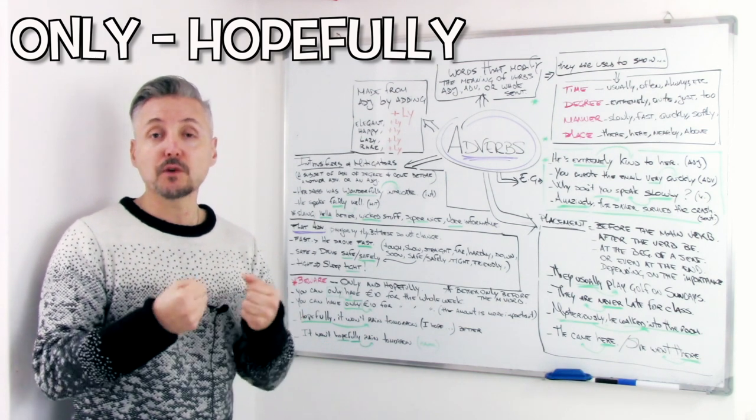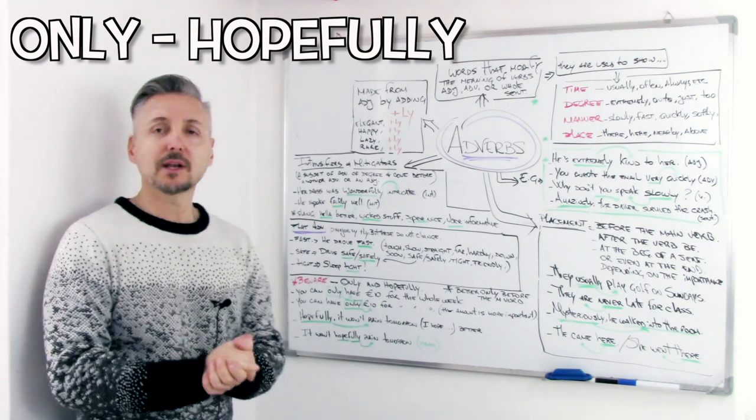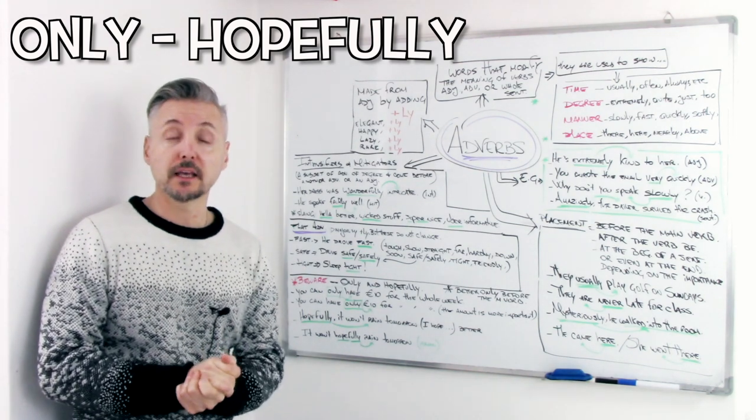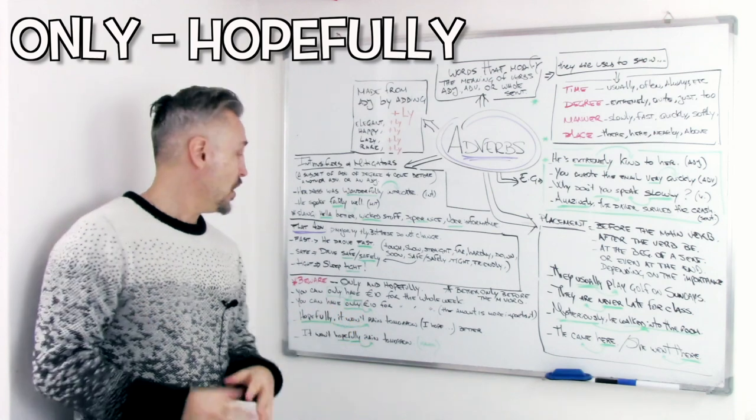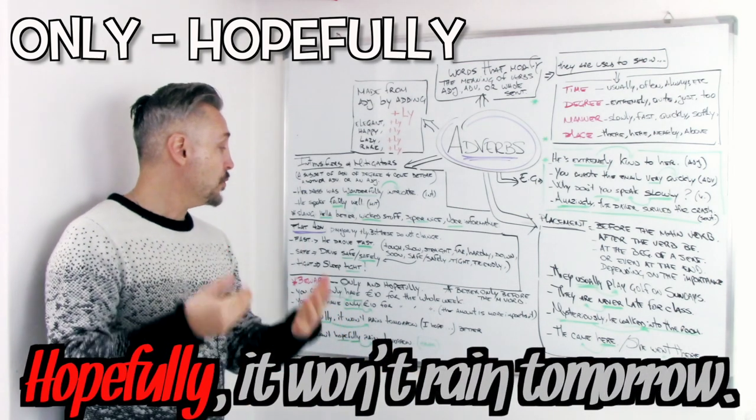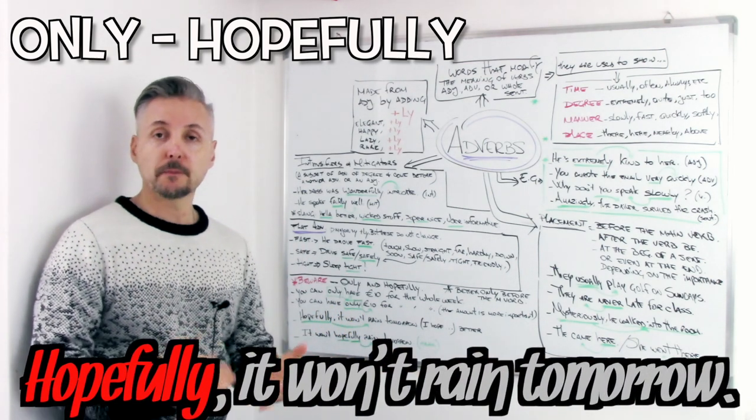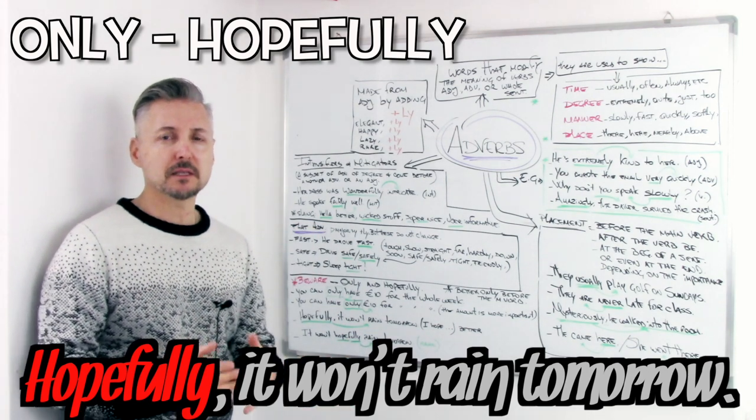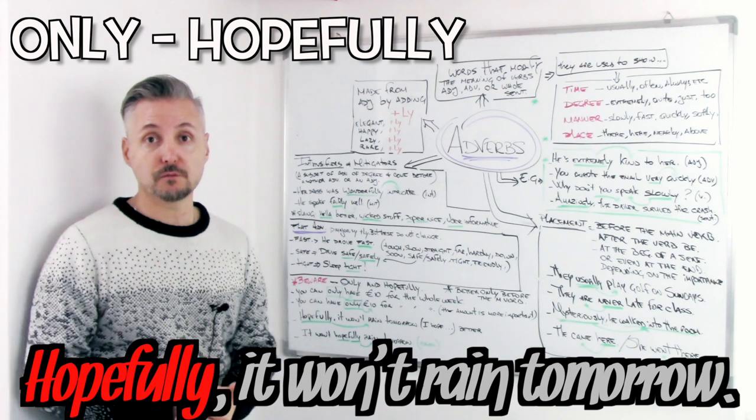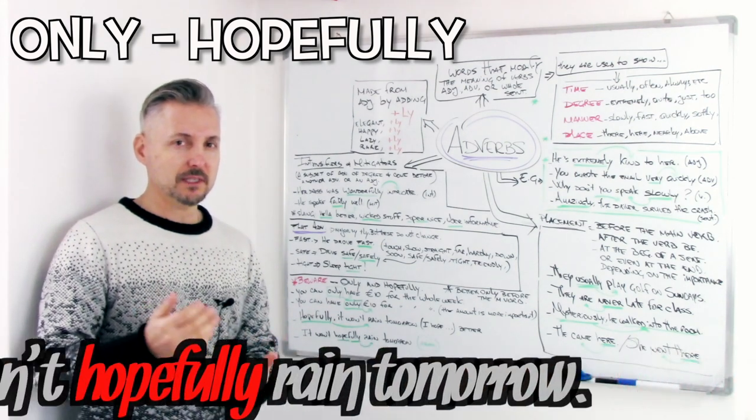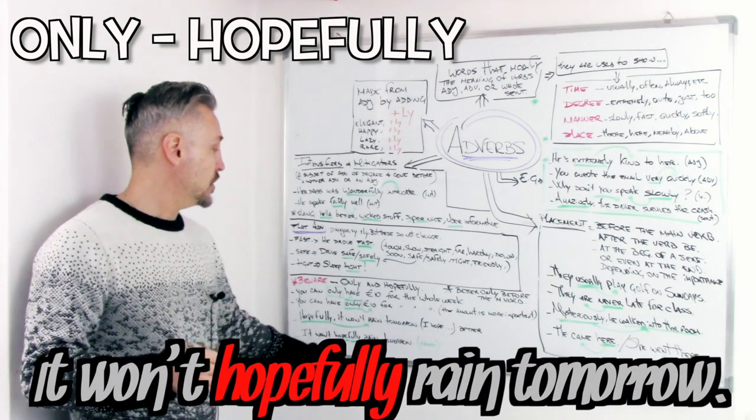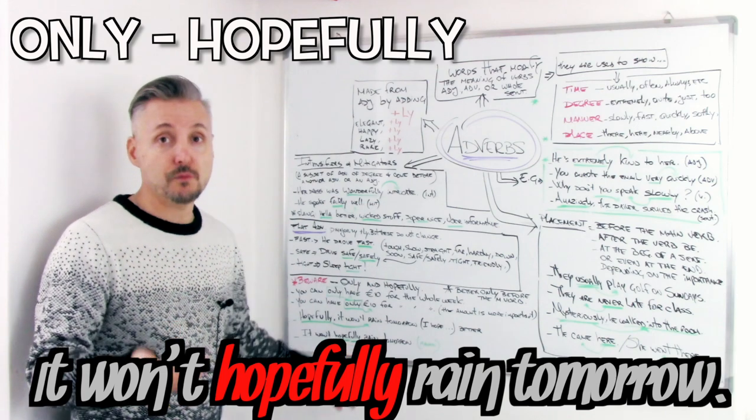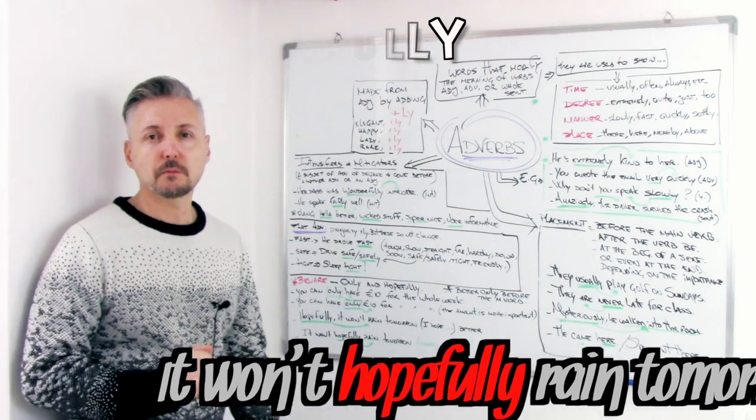Now, let's take a look at hopefully. We usually say hopefully it won't rain tomorrow. Hopefully it won't rain tomorrow. It means I hope it won't rain tomorrow. Or we can even say it won't hopefully rain tomorrow. Yes, that's also possible.